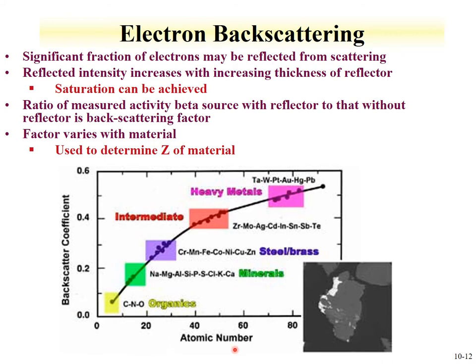The backscatter coefficient varies with material — lower Z material has a lower backscatter coefficient, and higher Z material has a higher backscatter coefficient. Backscattering is often used in combination with scanning electron microscopy to determine something about the elements undergoing microscopic analysis. By measuring what percentage of electrons scatter back, one can help identify the elemental composition of an unknown material.